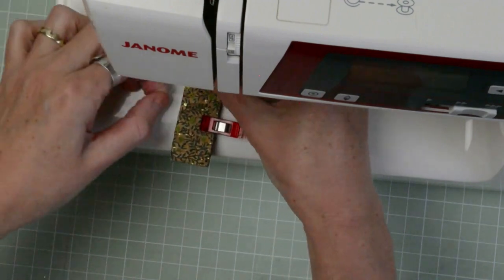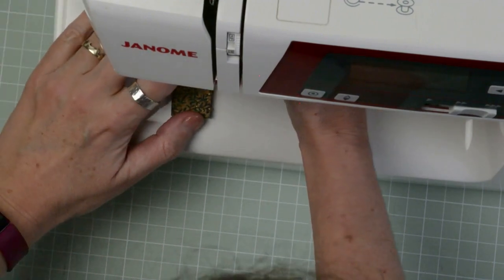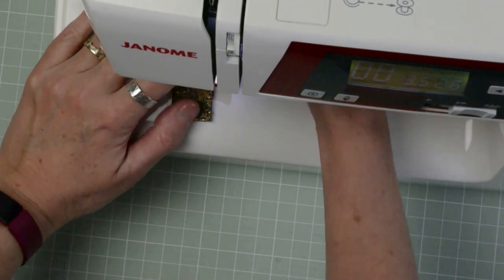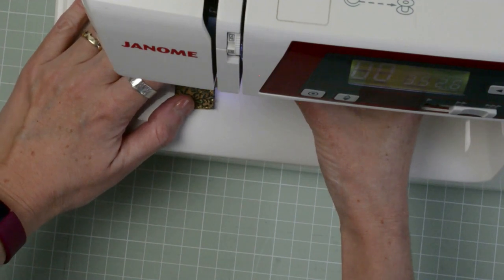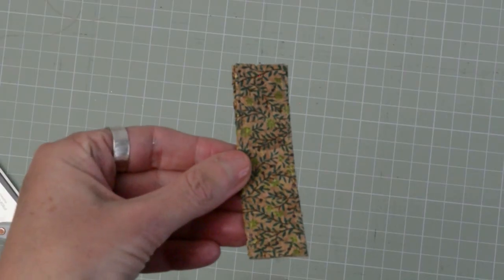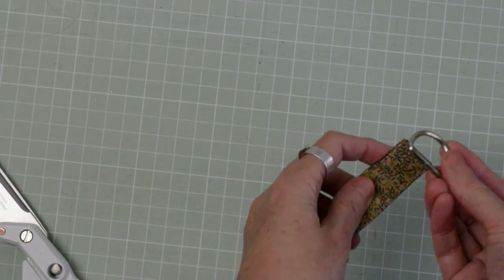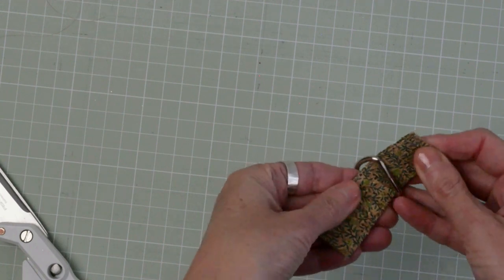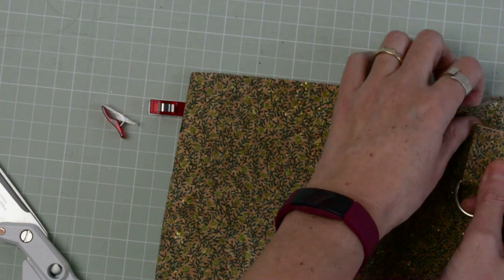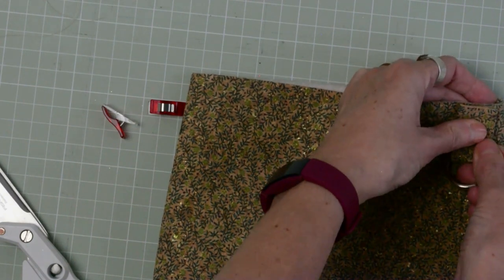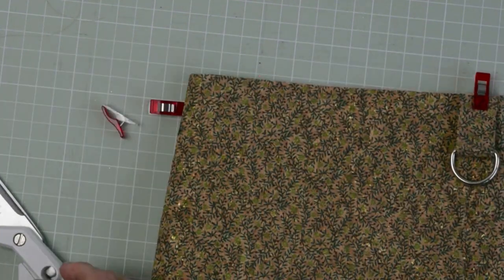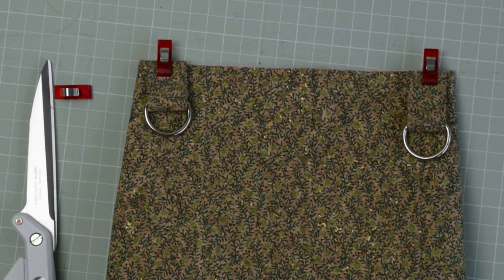I found I did need a walking foot for this, because the cork was facing the presser foot. You could use a Teflon foot, or you could put a little bit of masking tape under the bottom of your sewing machine foot if your sewing machine is struggling to cope. So there we have it. There's my D-ring. I'm just going to thread it through. I'm going to place that on the back of the bag, just in from the side seam, about a quarter of an inch, half an inch in. Baste these in place.